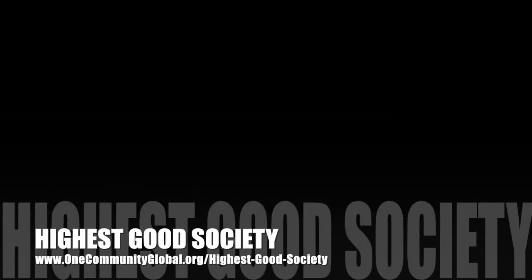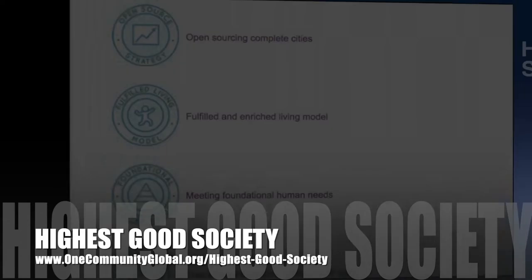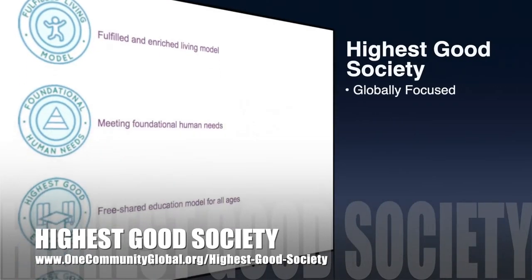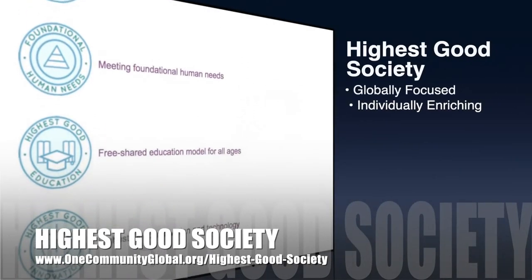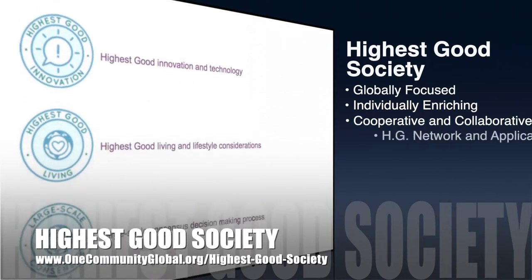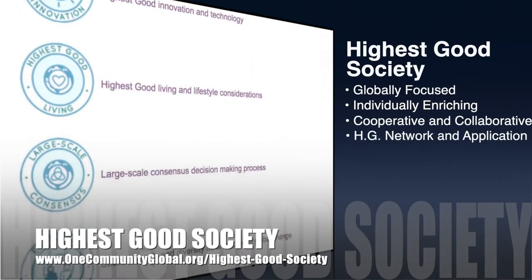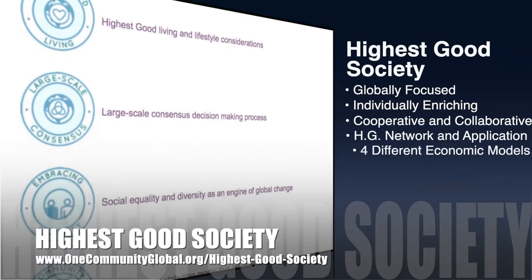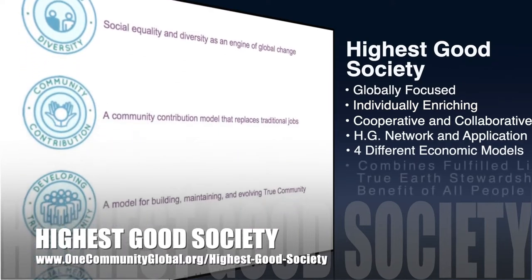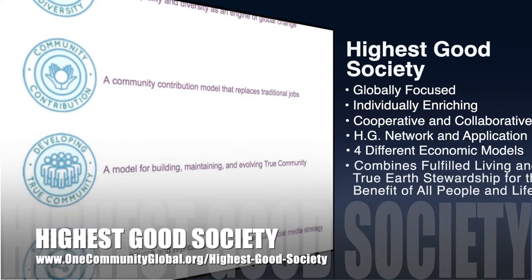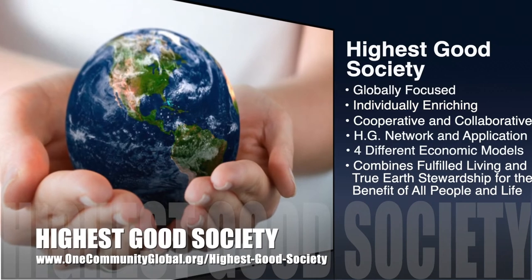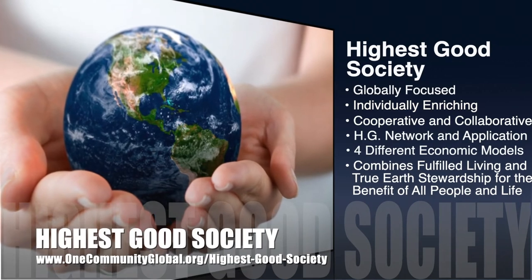The One Community approach to highest good society is globally focused, individually enriching, cooperative and collaborative, includes a highest good network and application, four different economic models, and combines fulfilled living and true earth stewardship for the benefit of all people and all life on this planet.